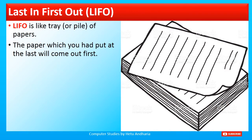Opposite to FIFO is the method called last in, first out, in short LIFO. To explain LIFO, we take the example of a pile of papers. If you arrange papers in a bunch, the paper which you keep on top — that is the paper you placed last — when you pick up a paper, that paper will come out first. This type of storage method is known as the LIFO method.